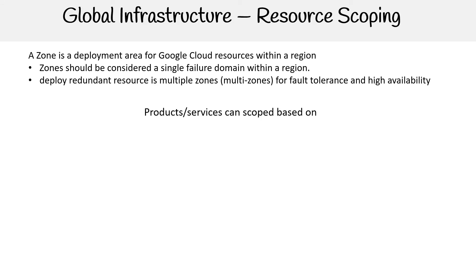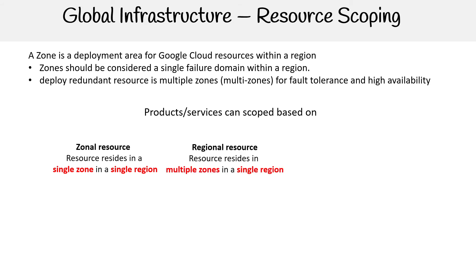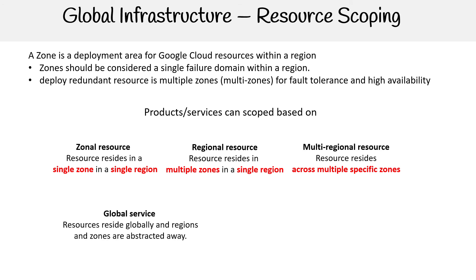So let's now talk about resource scoping. You can launch a resource in a single zone in a single region — this is a zonal resource. You have regional resources, where a resource resides in multiple zones in a single region. You have multi-regional resources, where resources reside across multiple specific zones. And you have a global service, where resources reside globally and regions and zones are abstracted away — very common with serverless services.